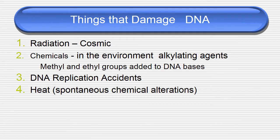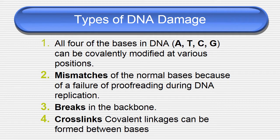Things that damage DNA: first is radiation including cosmic rays, chemicals in the environment such as alkylating agents adding methyl and ethyl groups to DNA bases, DNA replication accidents, heat, and spontaneous chemical alterations. Types of DNA damage include: all four bases — A, T, G, C — can be covalently modified at various positions; mismatches in DNA; breaks; and cross-links. DNA damage also includes failure of proofreading during replication, breaks in the DNA backbone, and covalent cross-linkages formed between bases.